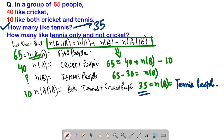So the first part of the question is solved — we had to find how many people like tennis, and that number is 35.